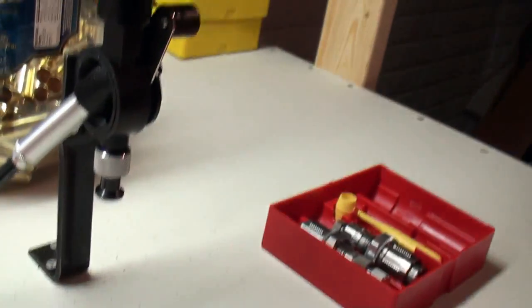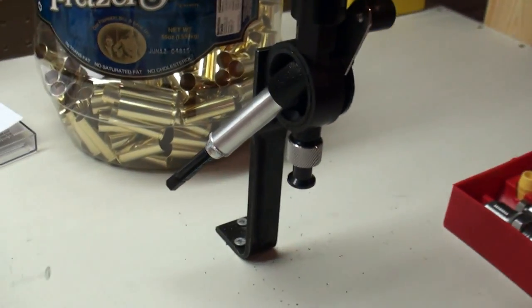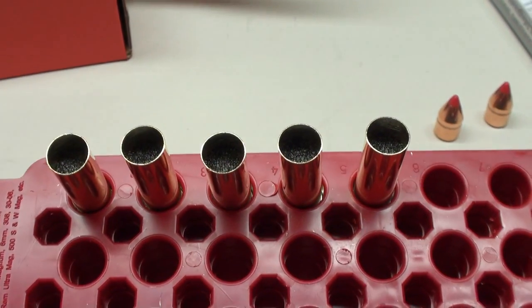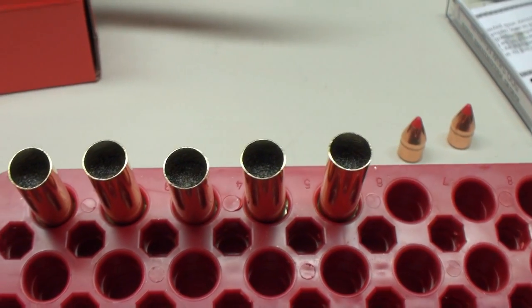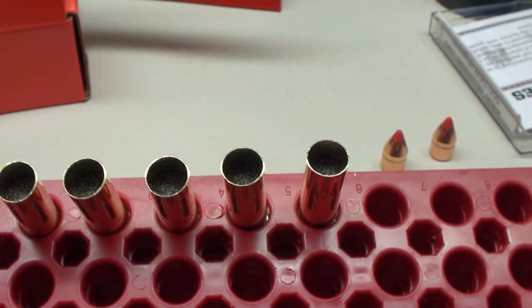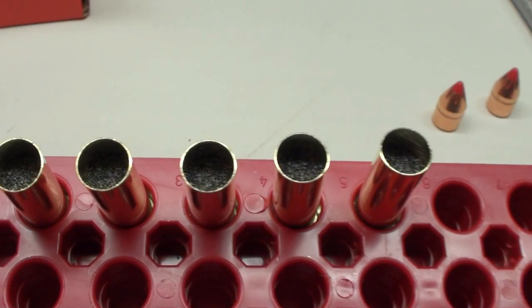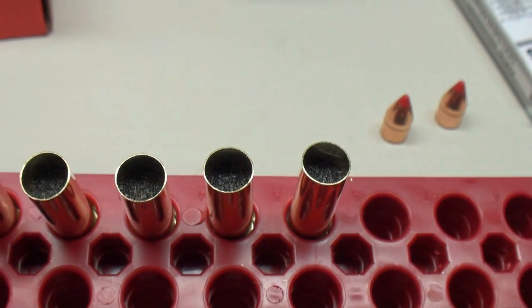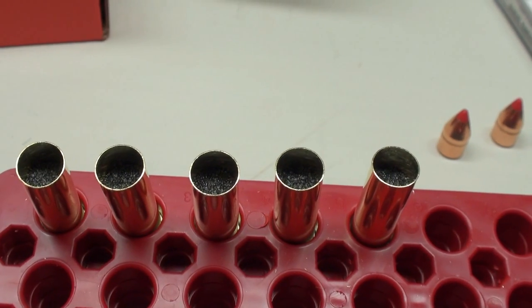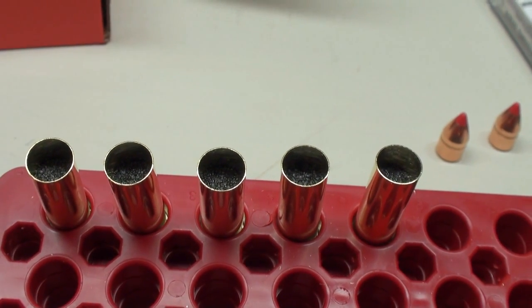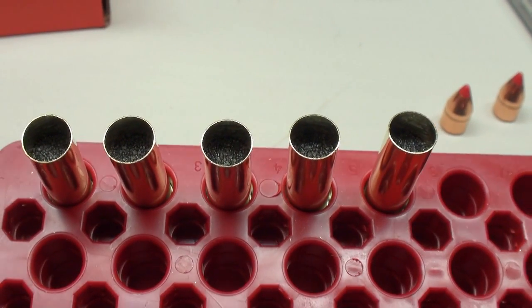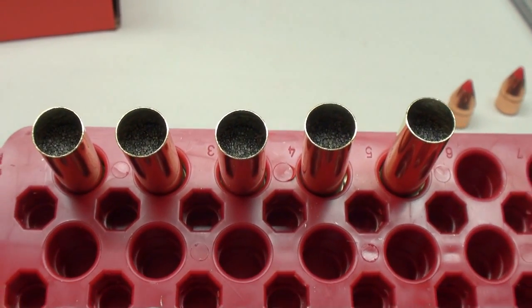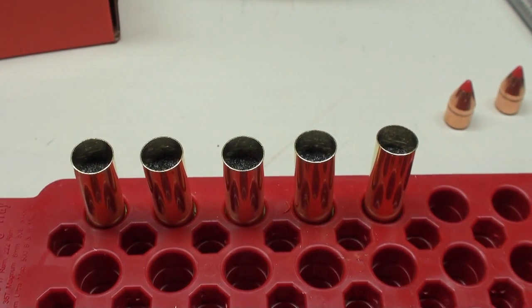Now, even though this powder is pretty darn accurate, what you always want to do is visually inspect your cases. This is pretty easy because there's so much powder that I'm using. If you were to get a double charge, you would definitely know—it would completely overflow. But you always want to look in here to make sure the powder is about the same height. Like I said, if you get a double powder charge, you're definitely going to know it in pretty much any bullet you use. Visually inspecting these, they look great. So the next step is to seat our bullets.